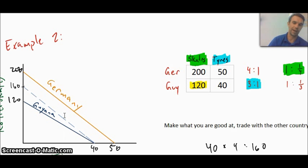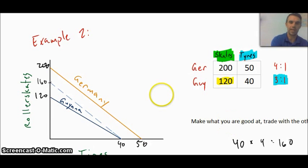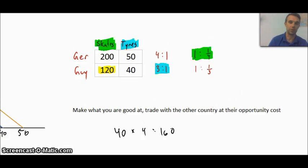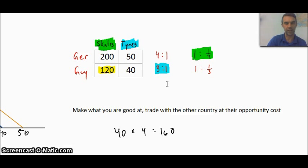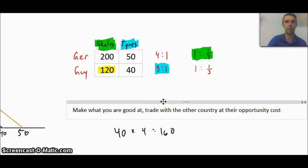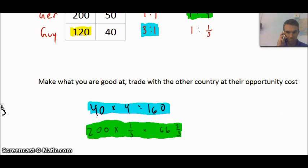What would be a good idea now is for you to figure out what's going to happen to Germany's PPF and what they're going to gain by trading with Guyana. Just like we did 40 times 4 for Guyana and tires, you need to do the same thing for Germany and skates. Calculate what they can trade the skates for with Guyana and then draw the new PPF. Pause now and check your answer.